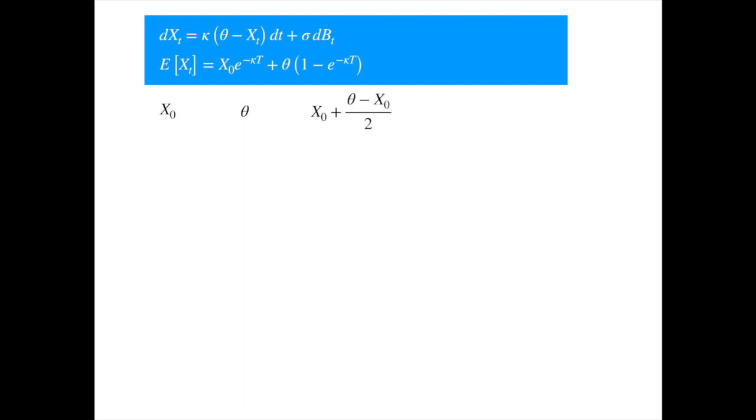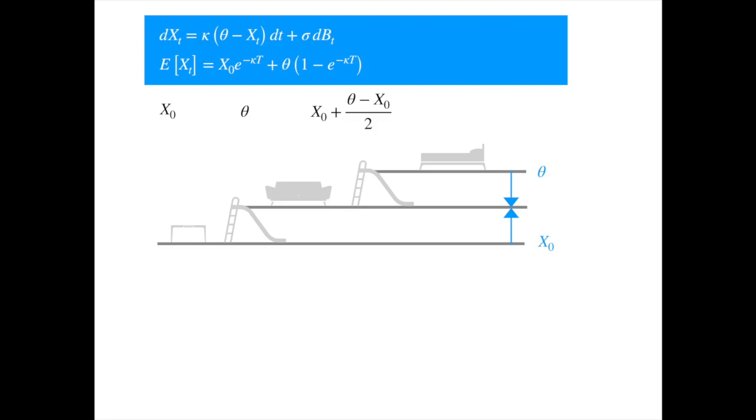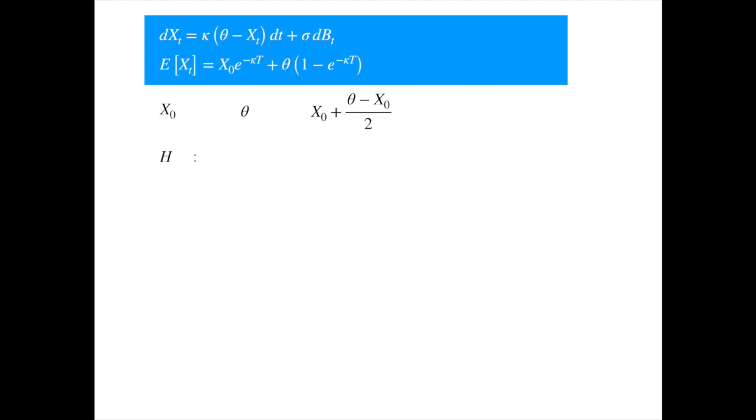To answer the question, let's reproduce the mean formula. Recall the current value of the process is X_0. The long-term mean is theta. The halfway point is X_0 + (theta - X_0)/2. This is easily verified. We want to get from X_0 to theta. The distance between the two is theta minus X_0. And half of this is just this distance divided by two. But since we start at X_0 instead of zero, the midpoint is X_0 plus half the distance. The question is now operational. Find the value of H such that the expected value of x at H, given its current value, equals this halfway value we just computed.